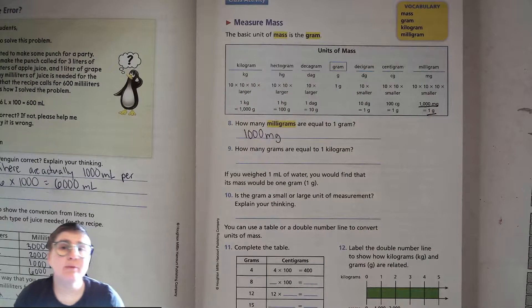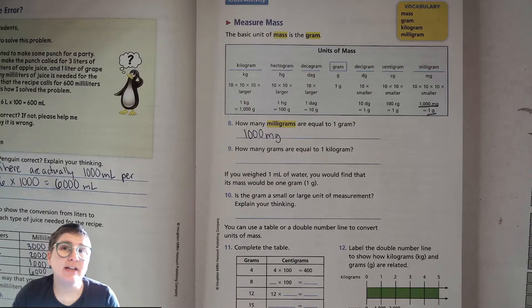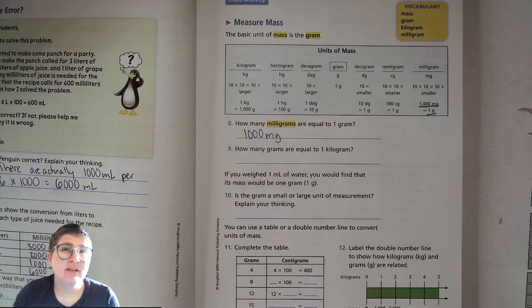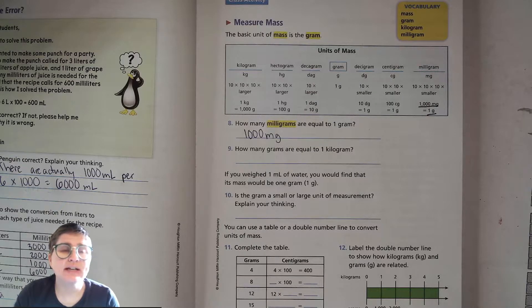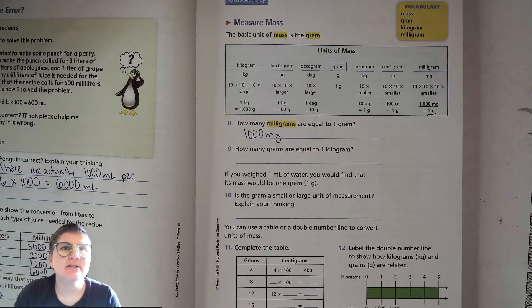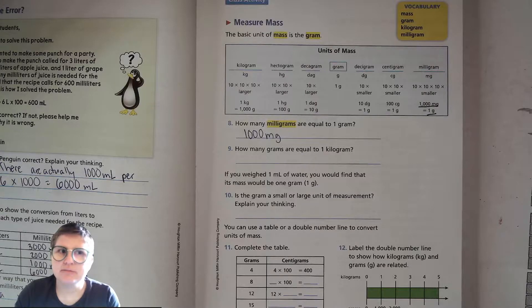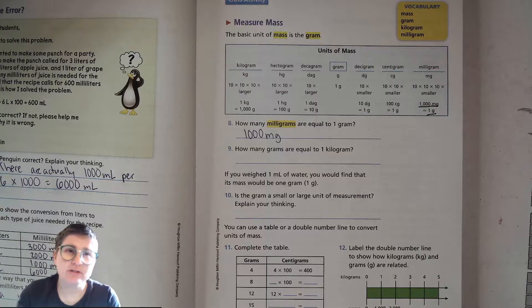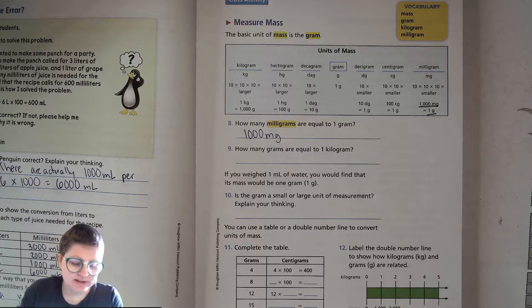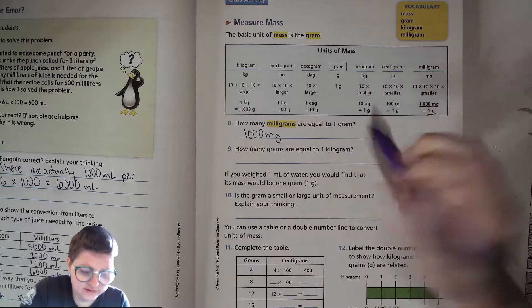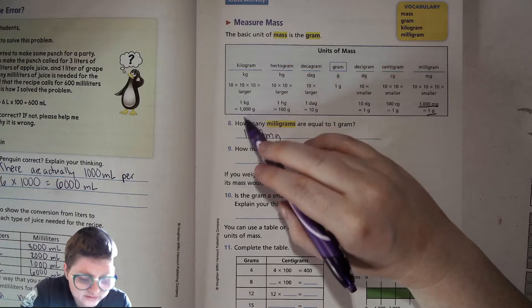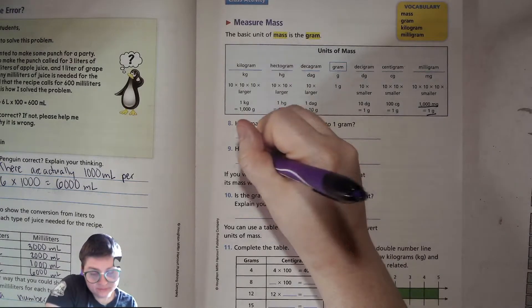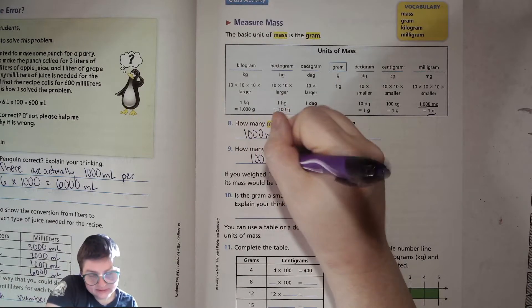A milligram would be an amount of something like a tiny amount of a pill, you know? Any tiny, like in some medicine, there's like 400 milligrams, 200 milligrams. Very small. How many grams are equal to one kilogram? Well, 1000 grams, right? 1000 grams is one kilogram. So 1000 grams.